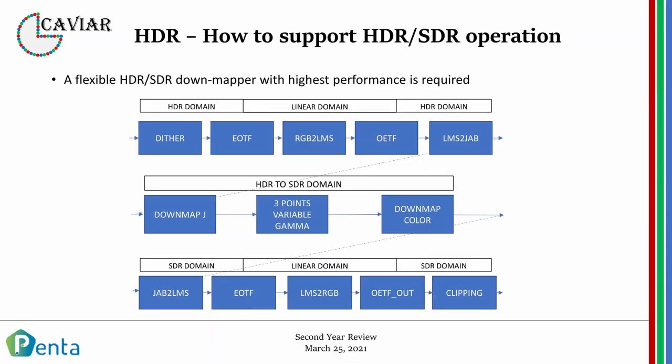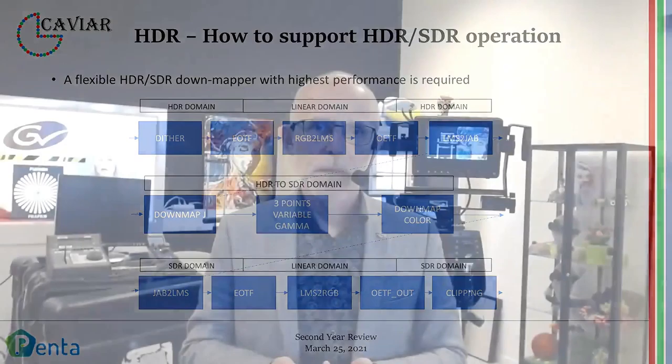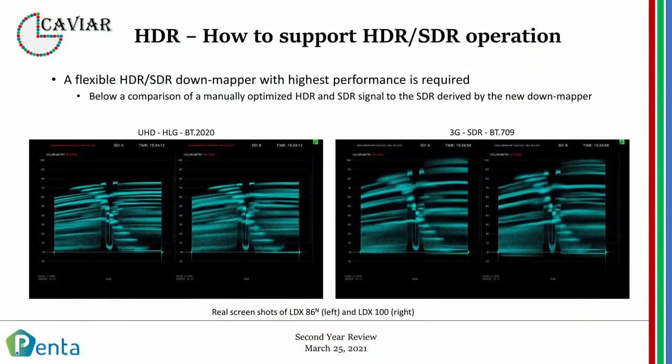As we can see on the block diagram, it is a quite complex process. HDR is first converted into the linear domain. Inside the linear domain, we first do the mapping from HDR into SDR, and then we also do the down-mapping from the wide color gamut into the 709 color gamut. Finally, we apply SDR settings such as gamma knee processing, and then do a clip.